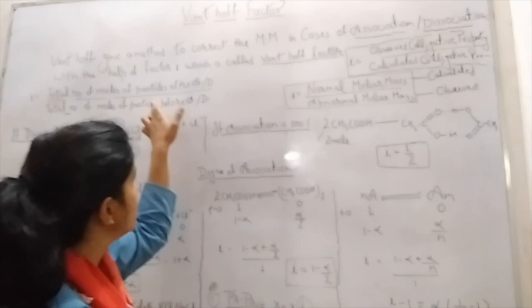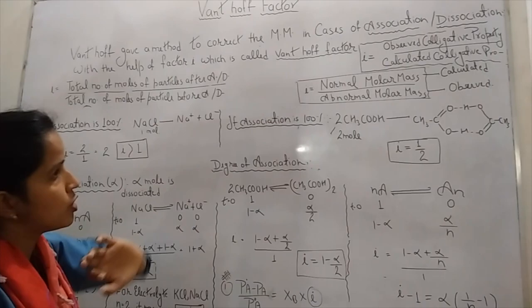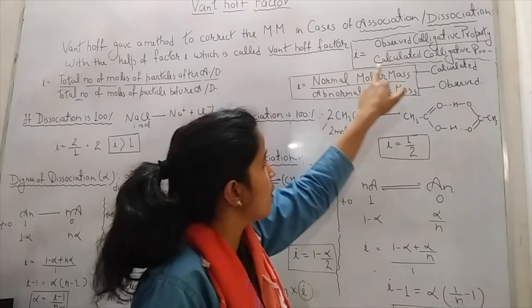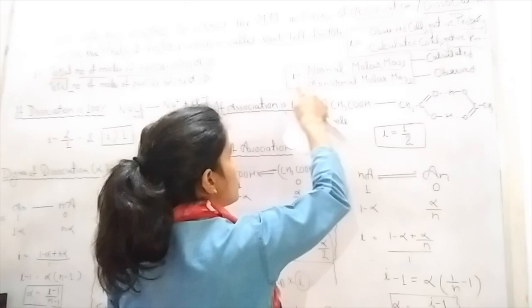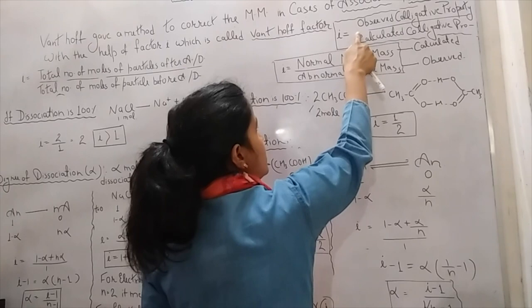So how is the value of 'i' calculated? I have written 3 formulas. First: i = total number of moles or particles after association/dissociation divided by total number of moles or particles before association or dissociation. Second: i = observed colligative properties divided by calculated colligative properties.